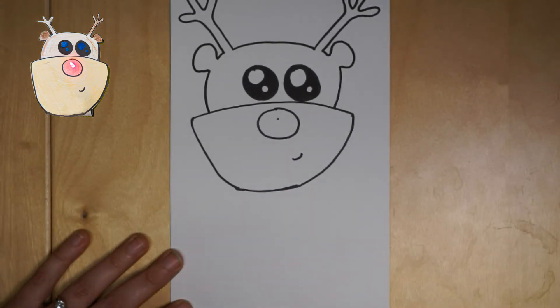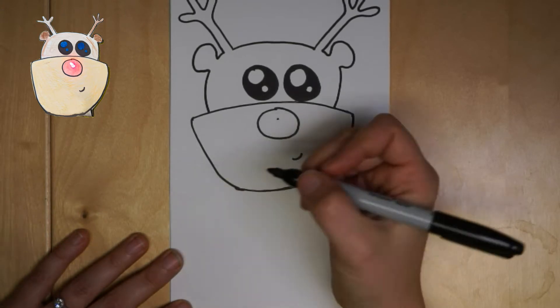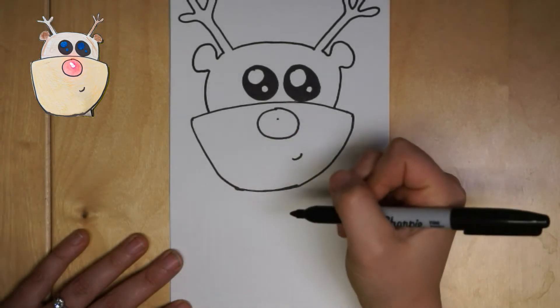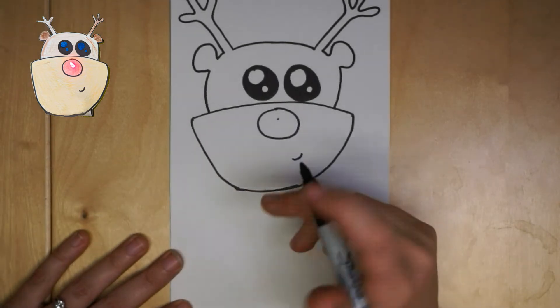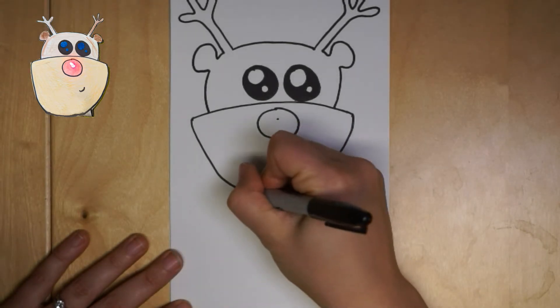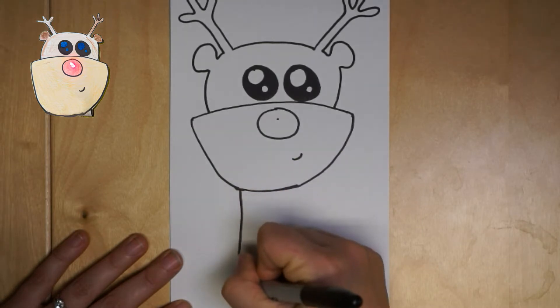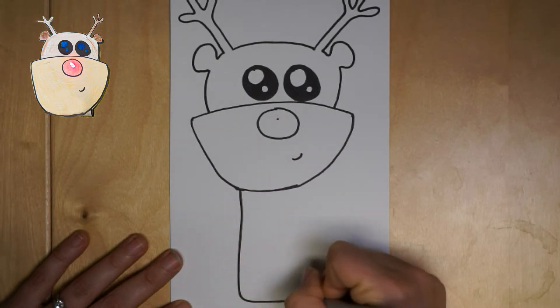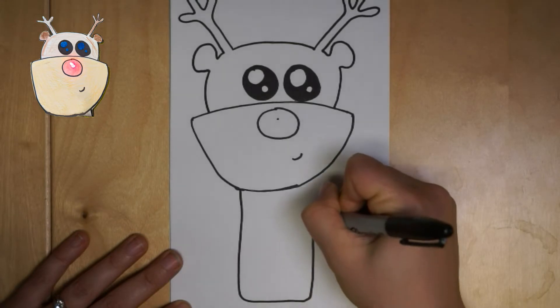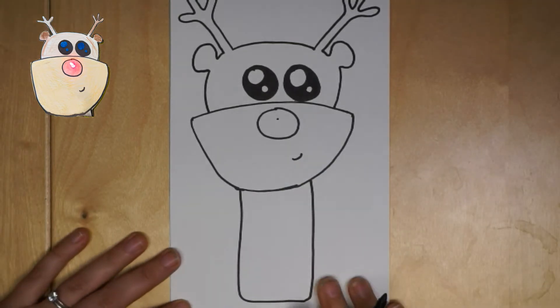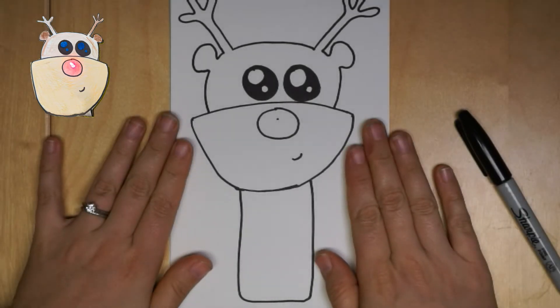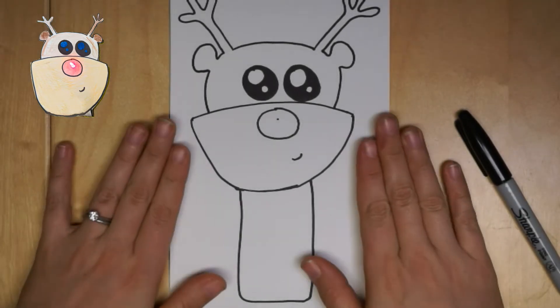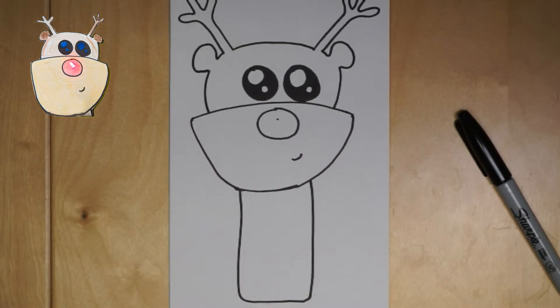And now the last thing we're going to do before we get to cutting and wiring our circuit up is we actually need to draw in the flap that's going to cover our circuit. So that's just a big rectangle. And you want to go down pretty far because this flap is going to go on the back side and cover up your circuit—at the same time it acts as a switch. So you want it to be pretty wide. All right so now we are going to cut our little Rudolph out now that we have him drawn out, and then we will get to wiring him up.